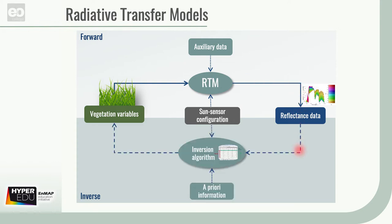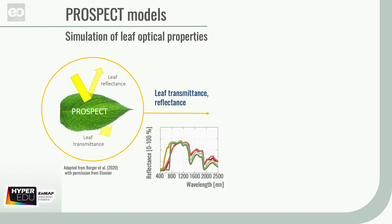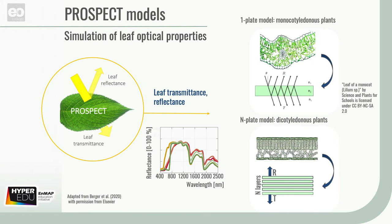Afterwards, the model can be used in inverse mode to estimate biophysical and biochemical vegetation properties on the basis of image spectra. A popular RTM for the simulation of leaf optical properties is the PROSPECT model, which simulates the directional hemispherical reflectance and transmittance over the solar spectrum between 400 and 2500 nanometers. Leaf optical properties are mainly driven by a structure parameter, i.e., the number of stacked elementary homogeneous layers, and by the absorption coefficient of one elementary layer.